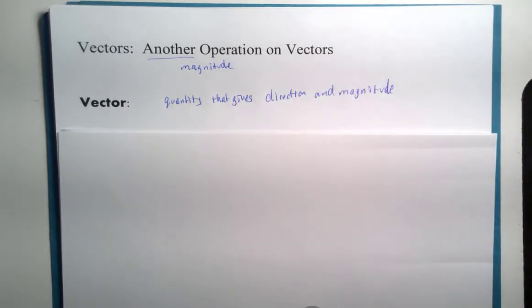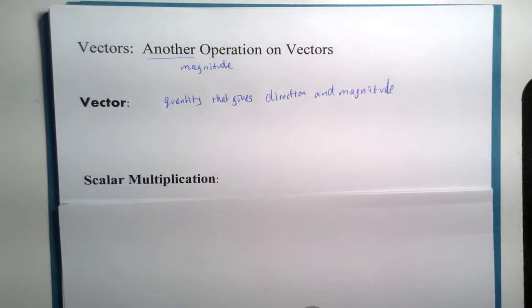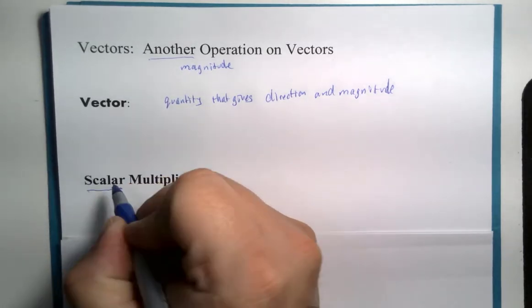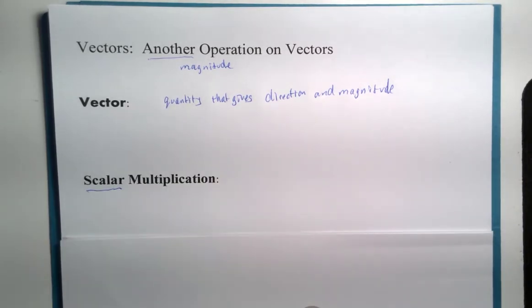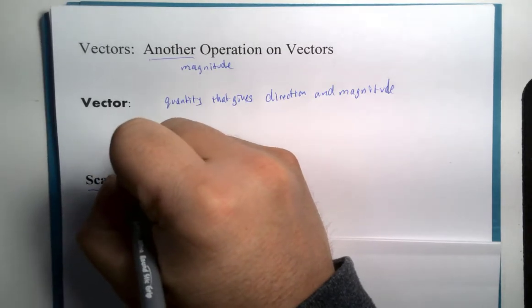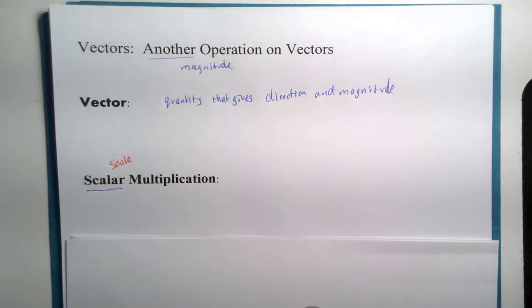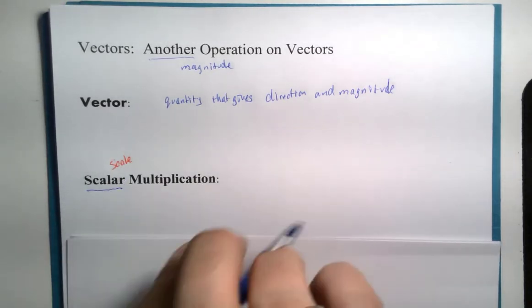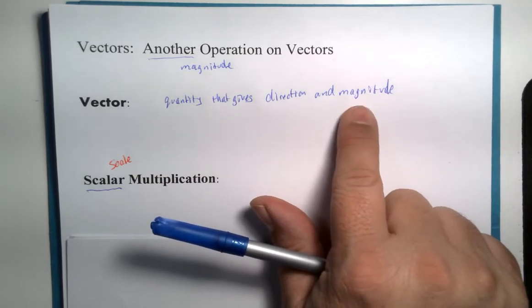So we are going to look at scalar multiplication. A scalar would be referring to what you might call the scale on a model or on a map or an architecture's drawings. The scale would refer to primarily our magnitude. Not a hundred percent, but primarily our magnitude.